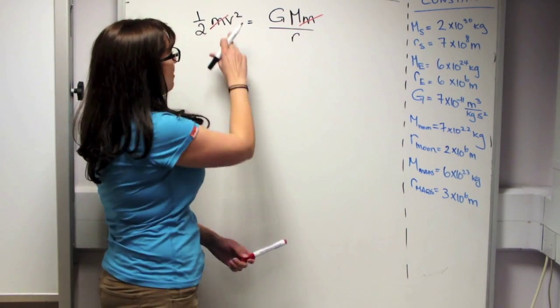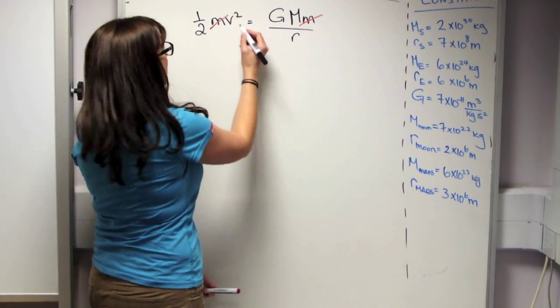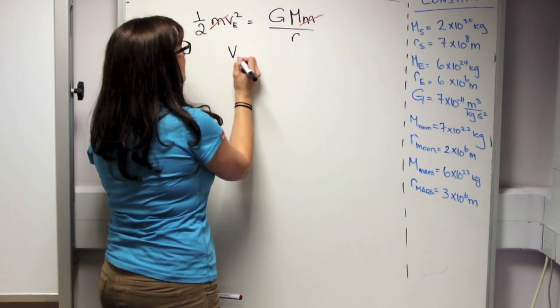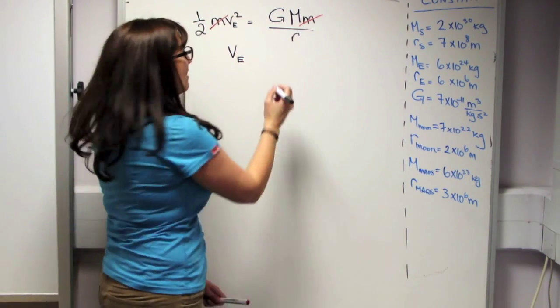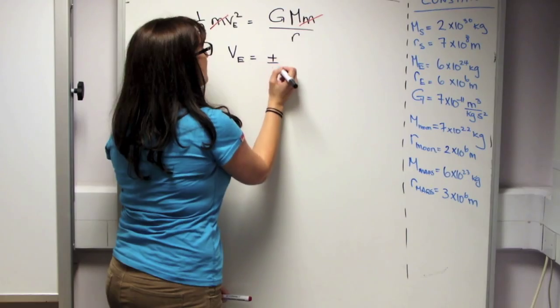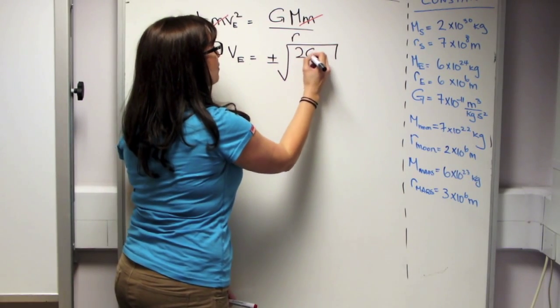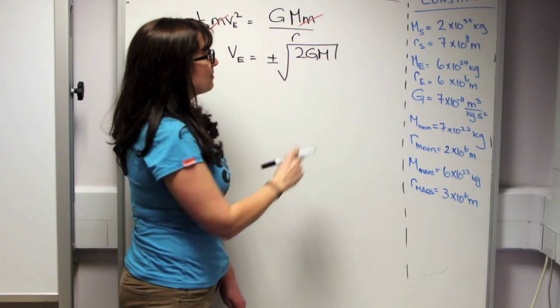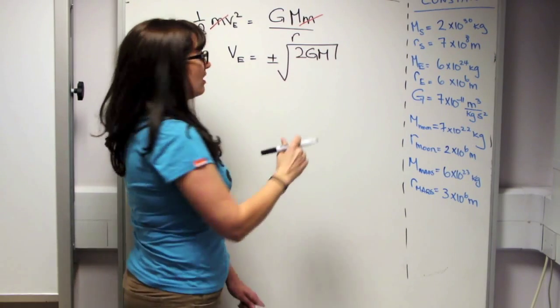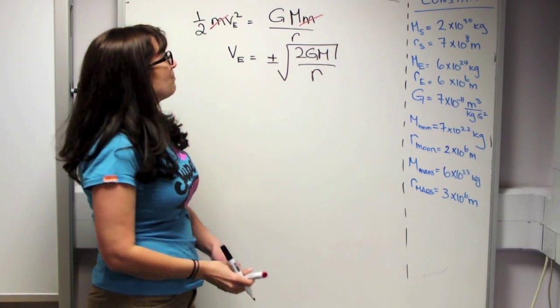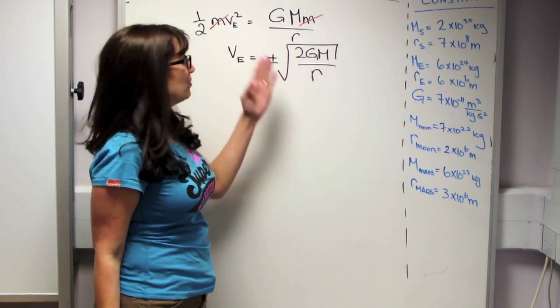Now solving for the escape velocity, which I'll call V sub E, we find that the escape velocity is equal to plus or minus the square root of 2 times Newton's gravitational constant times the mass of the Earth divided by its radius. Plus or minus comes in when we take the square root.